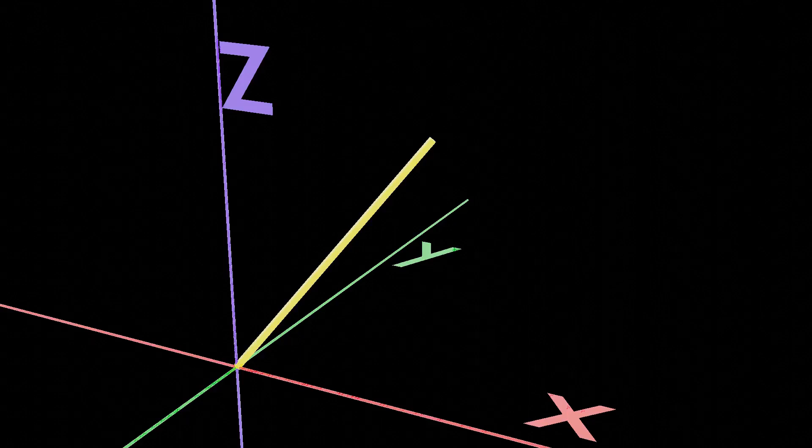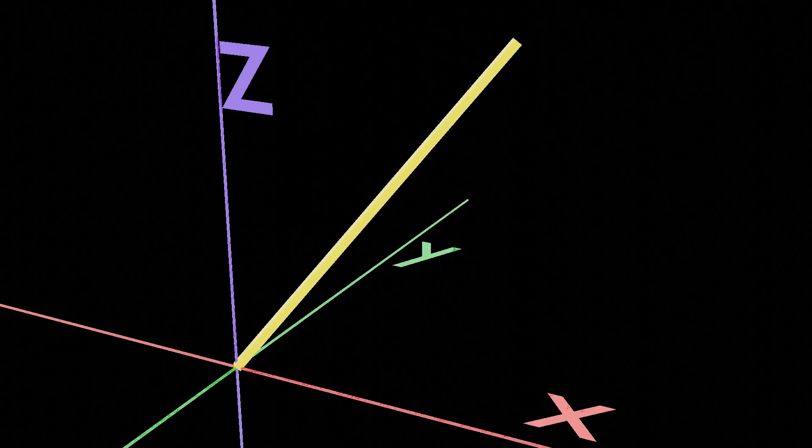The spherical coordinate system depends on three different parameters. The first one is the distance between the point and the origin, and it takes the symbol r.